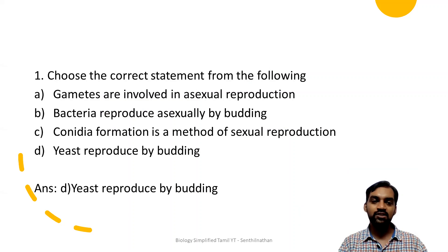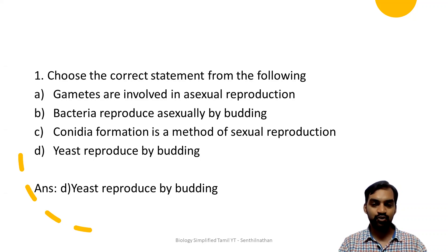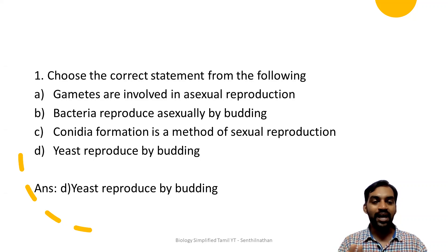First question: choose the correct statement from the following. Option A: Gametes are involved in asexual reproduction. Option B: Bacteria reproduce asexually by budding. Option C: Conidia formation is a method of sexual reproduction. Option D: Yeast reproduces by budding. The answer is the fourth option - yeast reproduces by budding. This is correct.